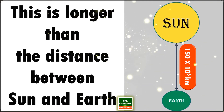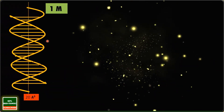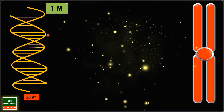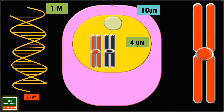Now you might get a question: why is DNA packaging required? The total length of DNA for a human cell is around 1 meter, and this DNA has to be packaged into the chromosomes. The size of a eukaryotic cell is around 10 micrometers, and the nucleus is even smaller. This 1 meter long DNA has to be packaged into a nucleus with a diameter of around 4 micrometers — so packaging is absolutely required.